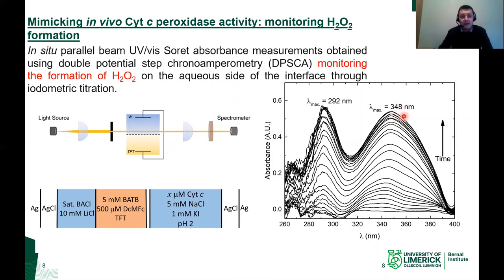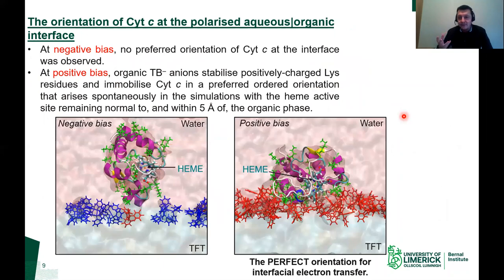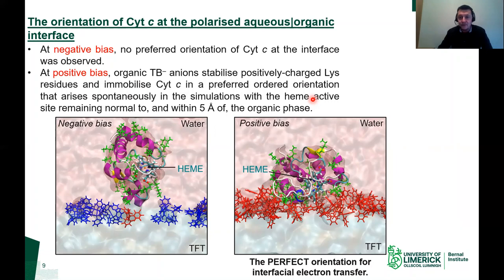We are really mimicking the in vivo cytochrome C peroxidase activity, using slightly denatured cytochrome C to reduce oxygen. This is quite an amazing result — direct electron transfer between decamethylferrocene and cytochrome C at a liquid-liquid interface has never been seen before. In fact, no electron transfer between any redox protein has been observed at a liquid-liquid interface before. So why is it happening in our system? We collaborated with Professor Damien Thompson's group at the University of Limerick for molecular dynamics simulations.